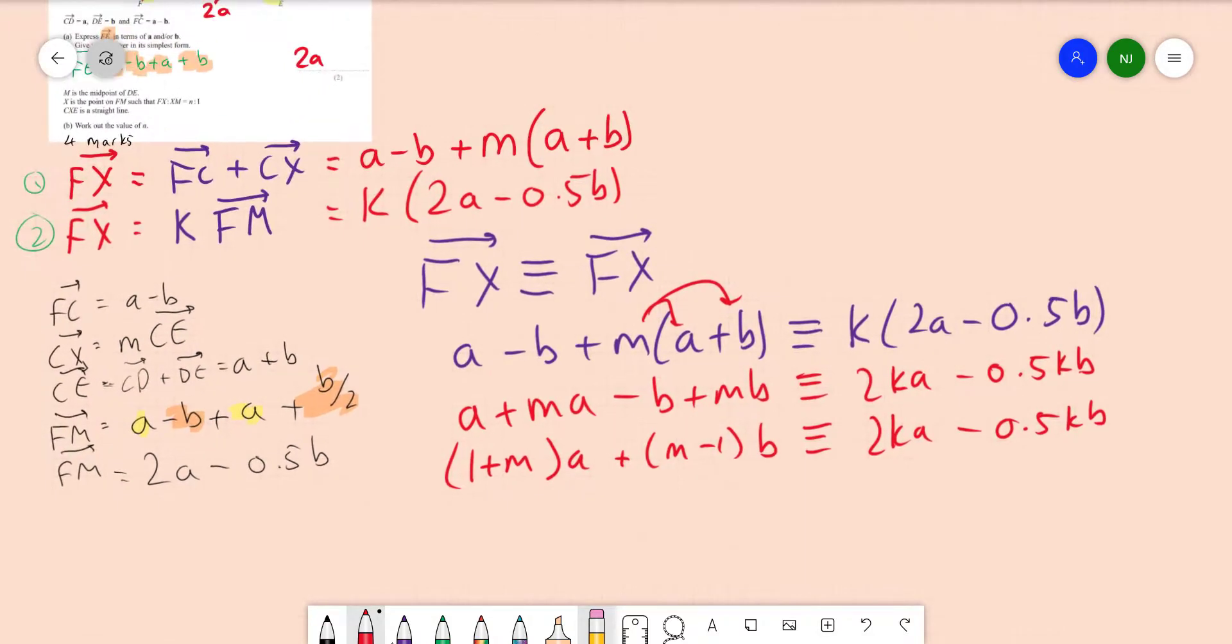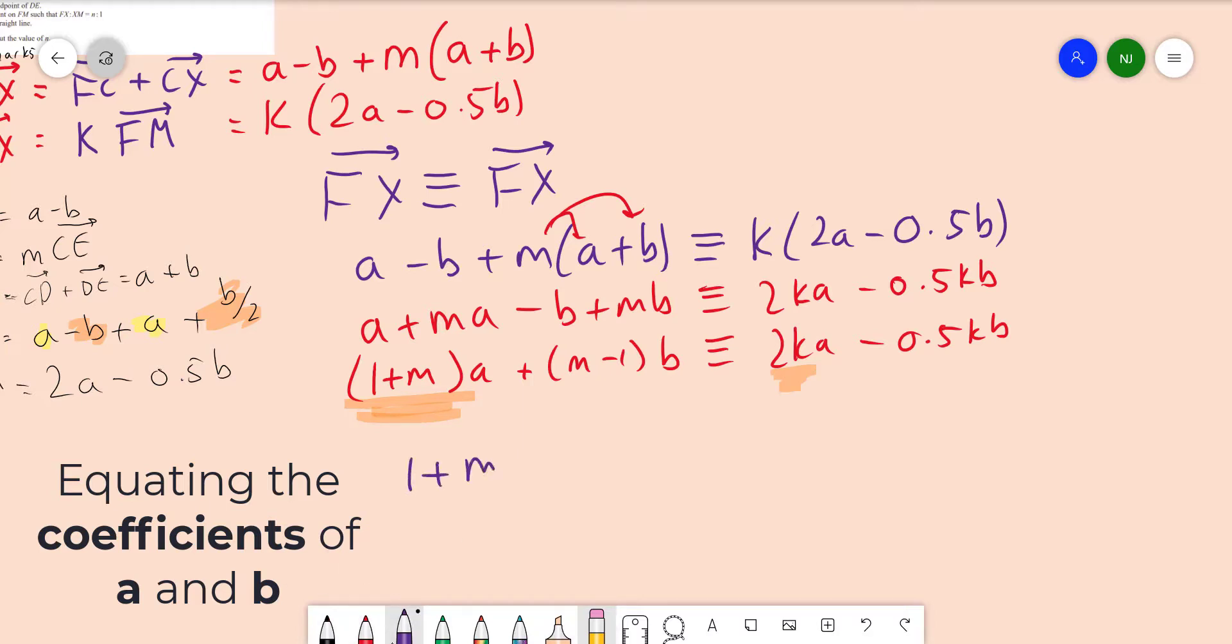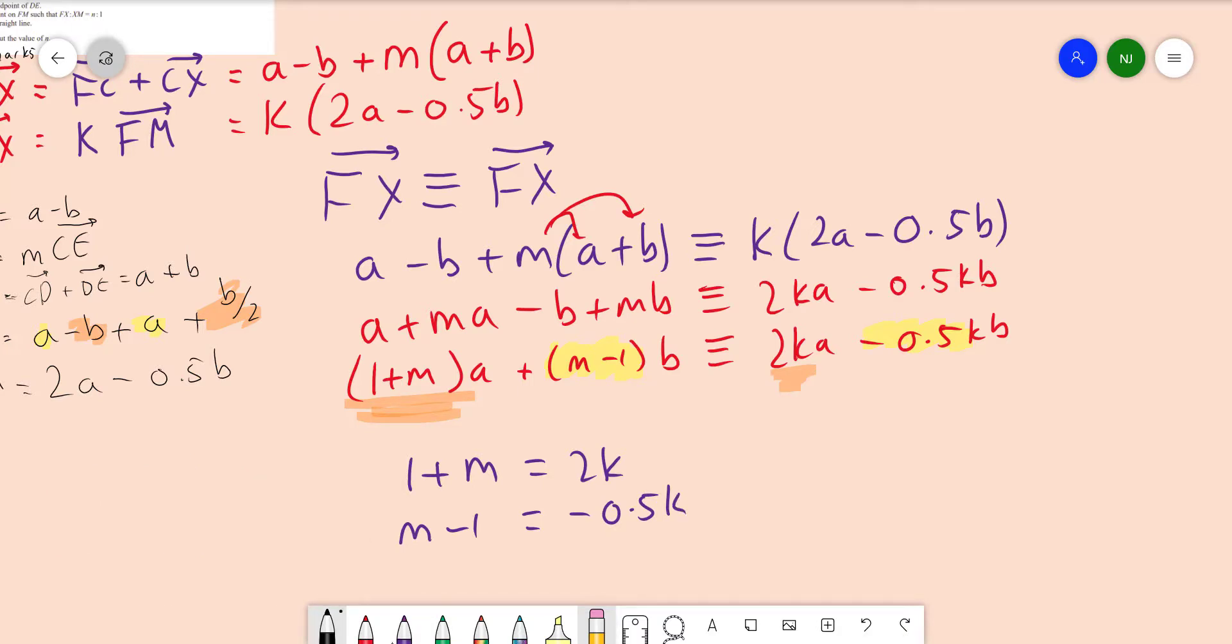Factorizing this, I really have 1 plus m lots of a minus, actually, let's do plus m minus 1 lots of b. And this has to be equivalent to 2k a minus 0.5k b. So recap what we've done. We've just found two different routes to get from f to x, and we are equating them together. So what we have here is that we have a certain amount of a's and a certain amount of b's. We know that the coefficients have to be the same. 1 plus m has to be the same as 2k, because our coefficients of a have to be exactly the same. So we have 1 plus m equals to 2k. Similarly, we also know that the coefficient of b, these guys also have to be exactly the same, because we need the same amount of b. So we have that m minus 1 equals to minus 0.5k. And actually, then what we have is some simultaneous equations.